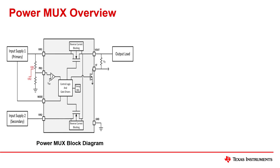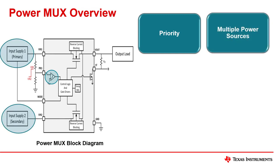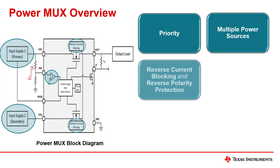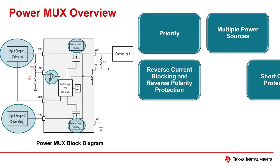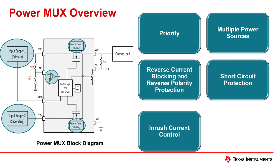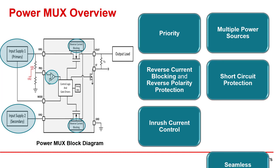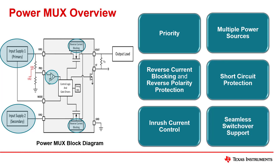Up next, we have power muxes, which are power switches that prioritize from multiple power sources. They are generally used for power distribution, handling typically two voltages, and have been used in applications of 2.8 to 22 volts and 0 to 4.5 amps of current. They have key protection features, such as reverse current blocking, reverse polarity protection, short circuit protection, inrush current control, and also support seamless switchover, which provides constant output voltage when switching power supplies, as opposed to an output drop with a discrete solution.